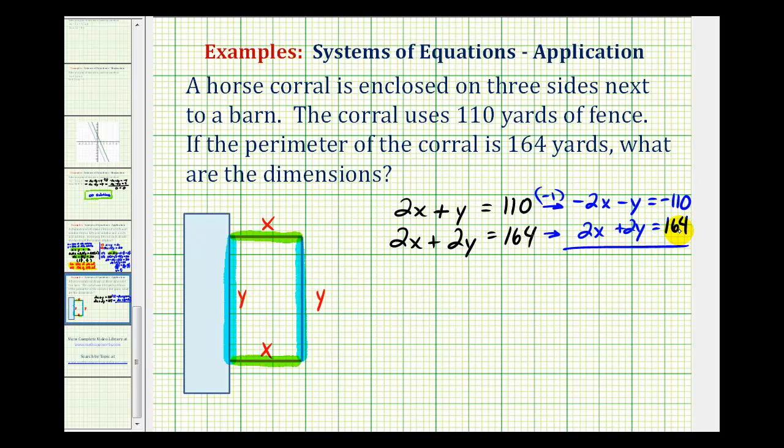And now we'll add these equations. Notice how here we have negative 2x plus 2x, that's going to be zero. Here we'd have negative y plus 2y, that's going to be y, equals negative 110 plus 164 is 54.